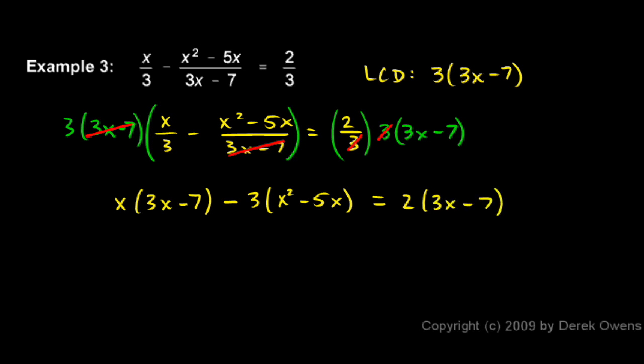Now there's a good bit of work to do to finish this, but it's not that hard. And there are no more fractions. So what I'll do here is distribute. x times 3x is 3x squared. And then I have minus 7x. And then here I distribute, and don't forget that you're distributing a negative 3. Negative 3 times x squared is minus 3x squared. And then the negative 3 times the negative 5x is plus 15x.